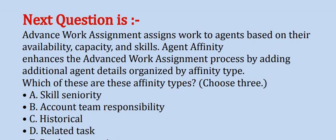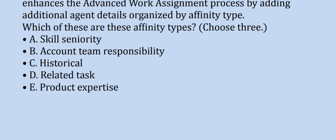Which of these are affinity types? Choose three options. Option A: Skill Seniority. Option B: Account Team Responsibility. Option C: Historical. Option D: Related Tasks. Option E: Product Expertise.